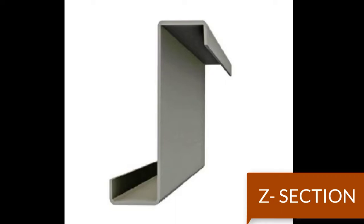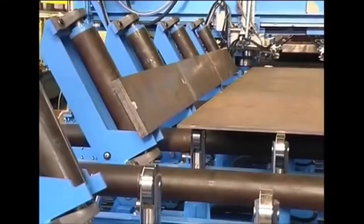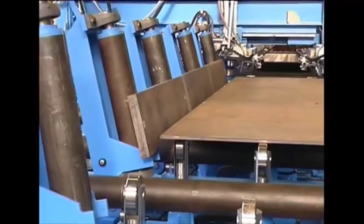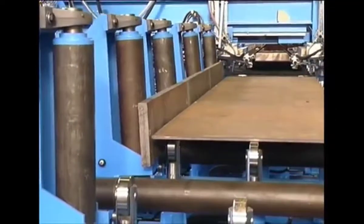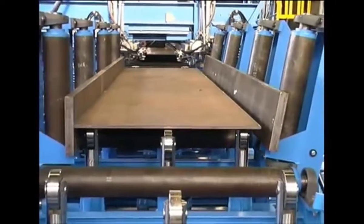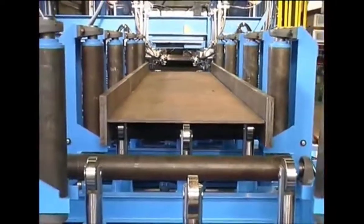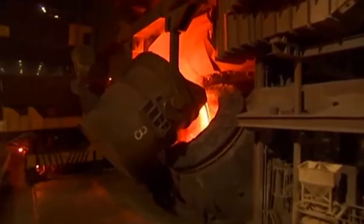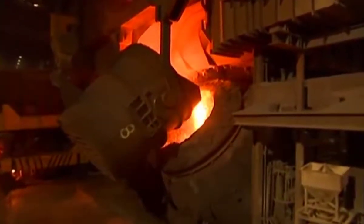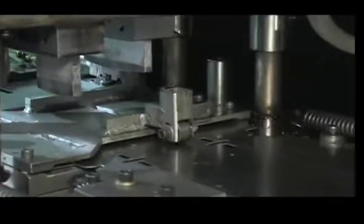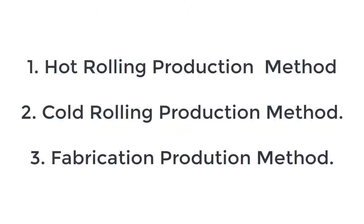Steel is so wonderful that you can blend it into a particular shape and size you need, to suit the purpose you need it for. This is regardless of the method of production you use. When I say method of production, I mean the process by which you produce your steel section, and this can be one of three methods: the hot rolling production method, the cold rolling production method, or the fabrication method.